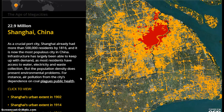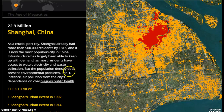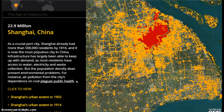With that growth, most residents do have access to water, electricity, and waste collection, but population density does present significant environmental problems. For instance, air pollution from the city's dependence on coal plagues public health. We do see that urbanization in both suburbs and central cities causes problems when it occurs very quickly.